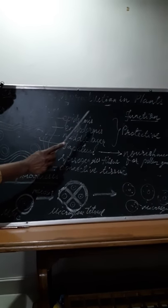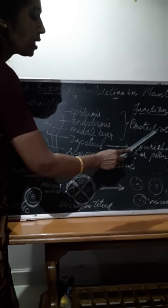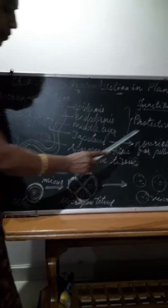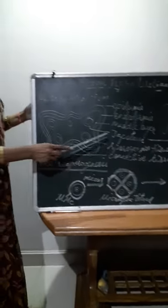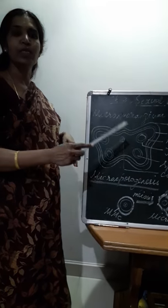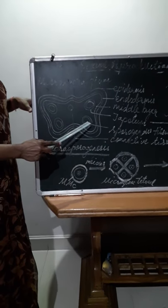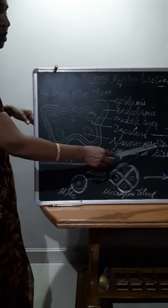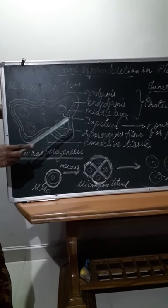Epidermis, endothecium and middle layer, these three together, protective in nature. Then tapetum, it gives nourishment for the pollen grains. When the pollen grains grow, it gives nourishment to them. When the sporogenous tissue undergo division and it produces pollen grains, these tapetum cells provide nutrition for the growing pollen grains.